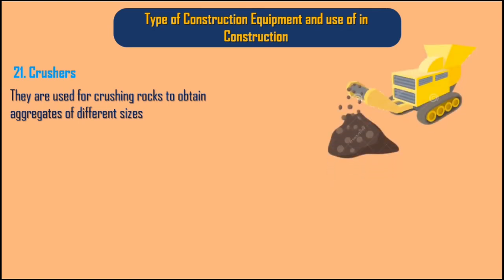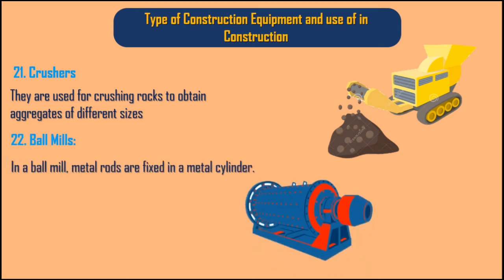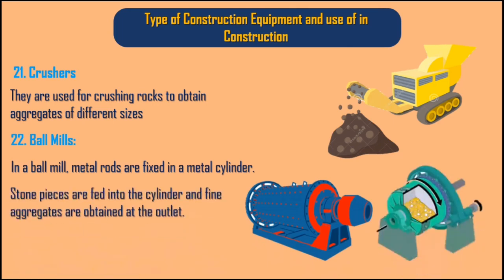22. Ball Mills. In a ball mill, metal rods are fixed in a metal cylinder. Stone pieces are fed into the cylinder and fine aggregates are obtained at the outlet.